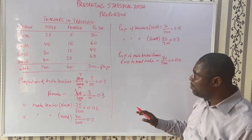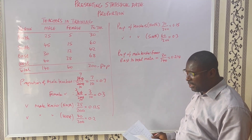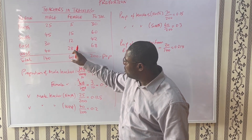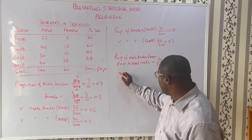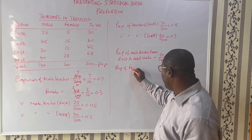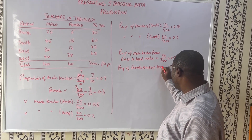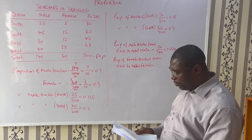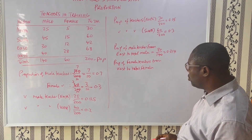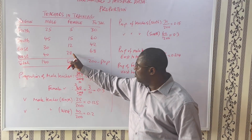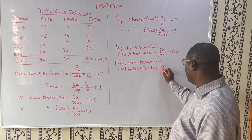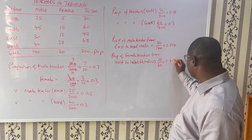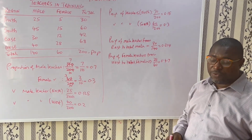Let's say the proportion of female teachers from the west to total females. That will give us 28 divided by 60. That value will give us 0.471, approximately 0.47.